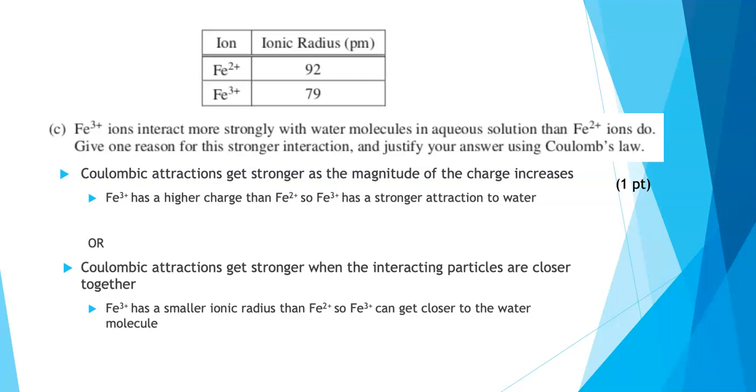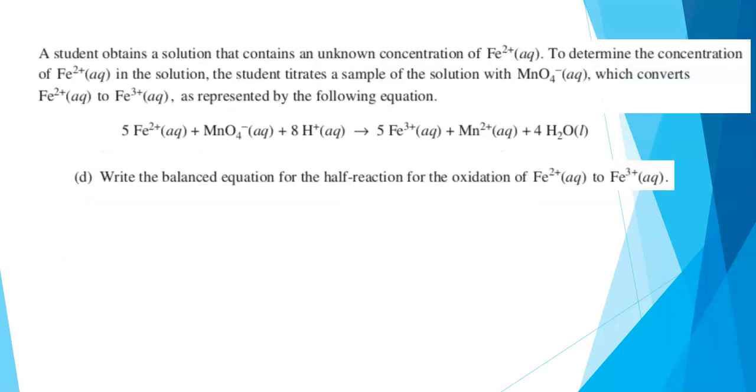You don't have to do both. Don't be tempted to write down everything. You probably don't have time for that. So either way, iron 3 ion has a stronger Coulombic attraction to the water molecule. The student obtains a solution that contains an unknown concentration of iron 2 ions. You want to find the concentration of it in solution, so we're going to do a titration with permanganate ion, which converts iron 2 plus to iron 3 plus, and we're given the balanced equation. So it's a really nice redox reaction.